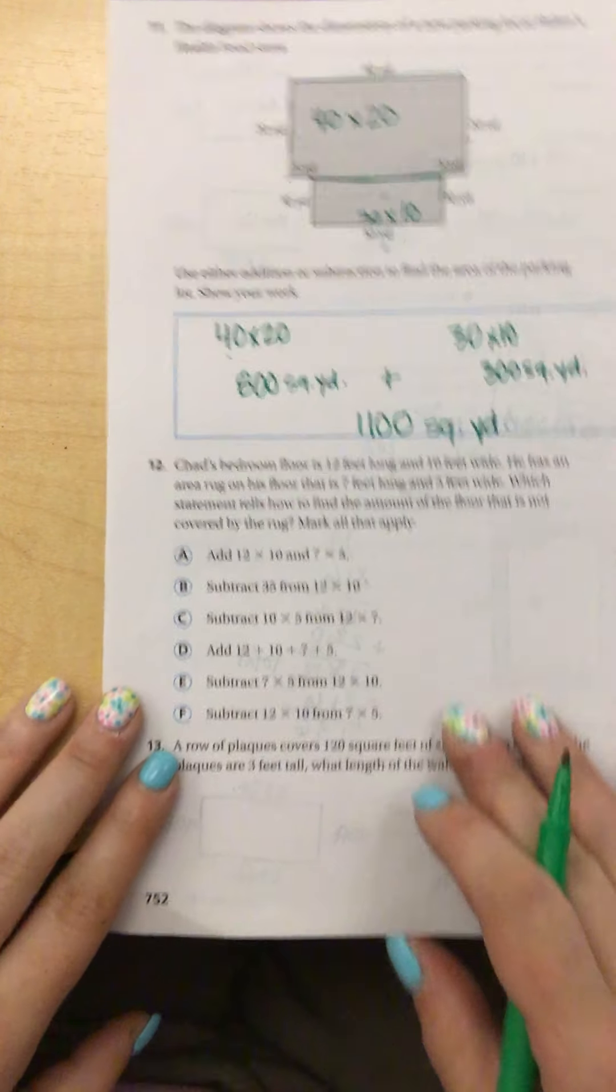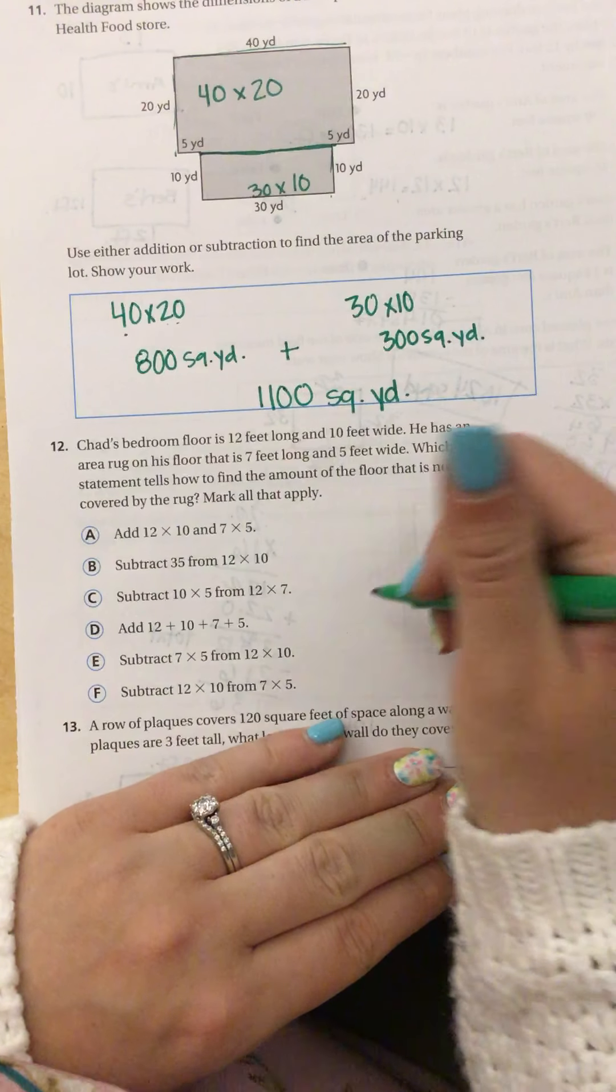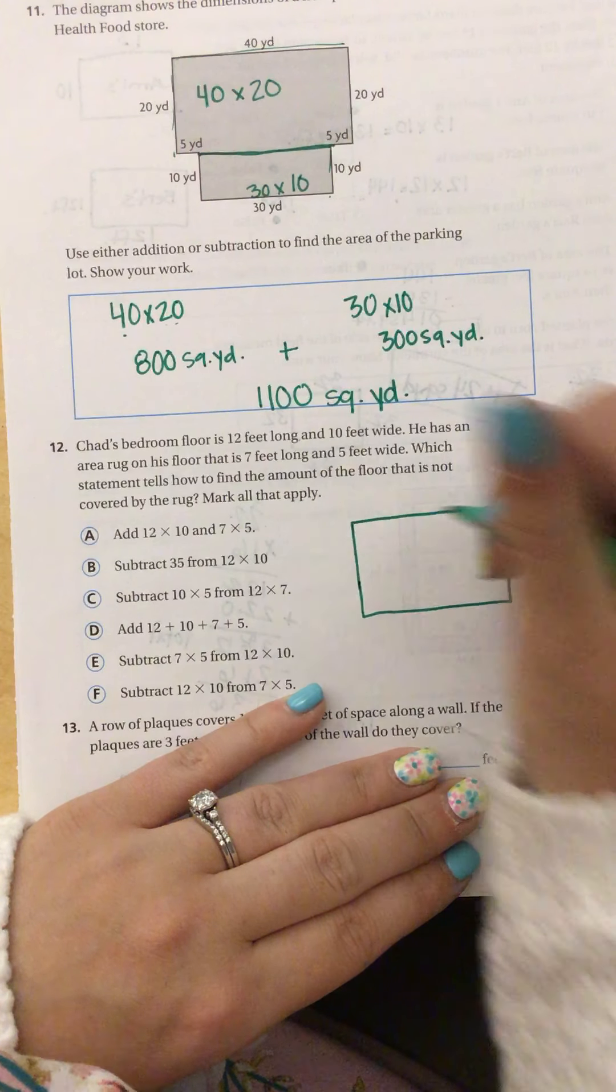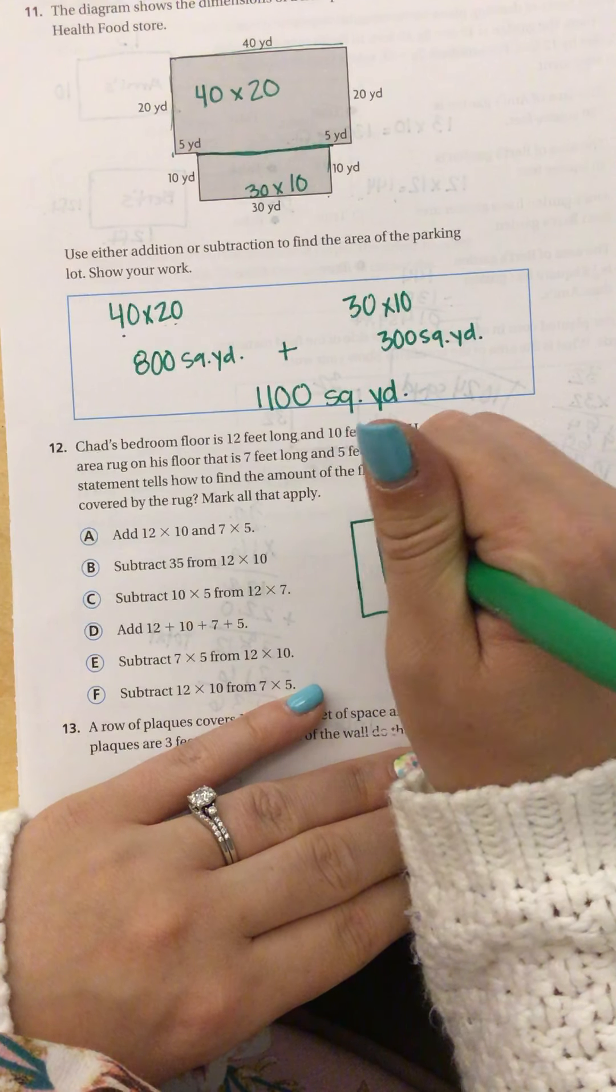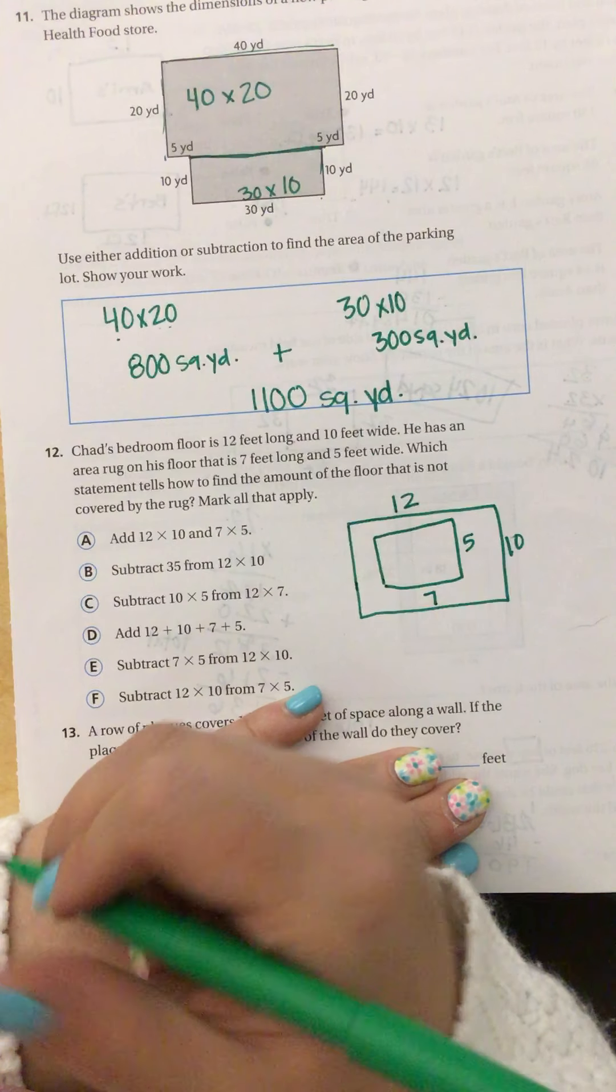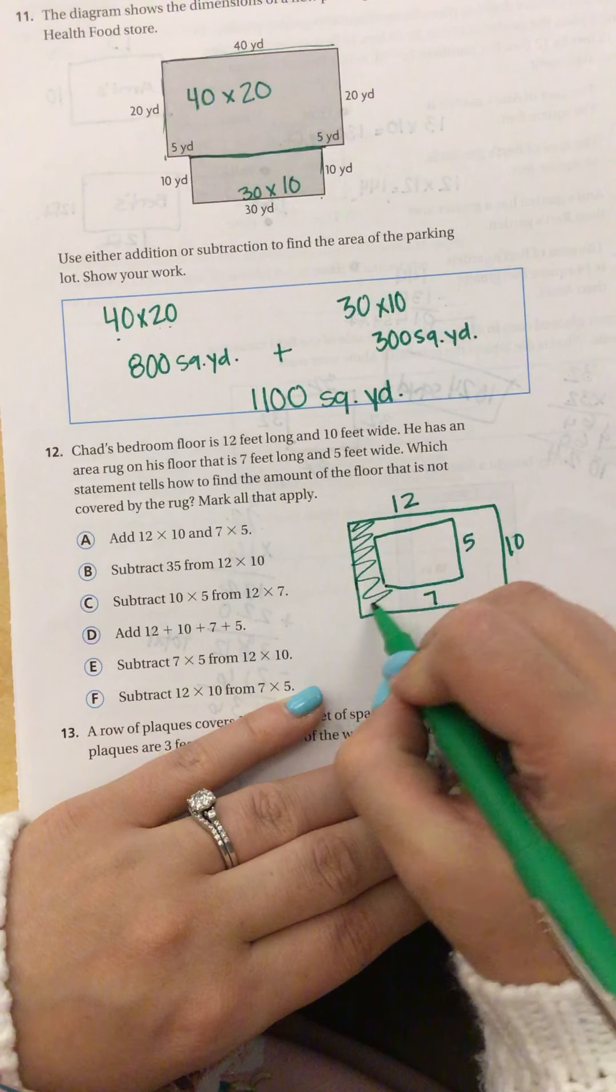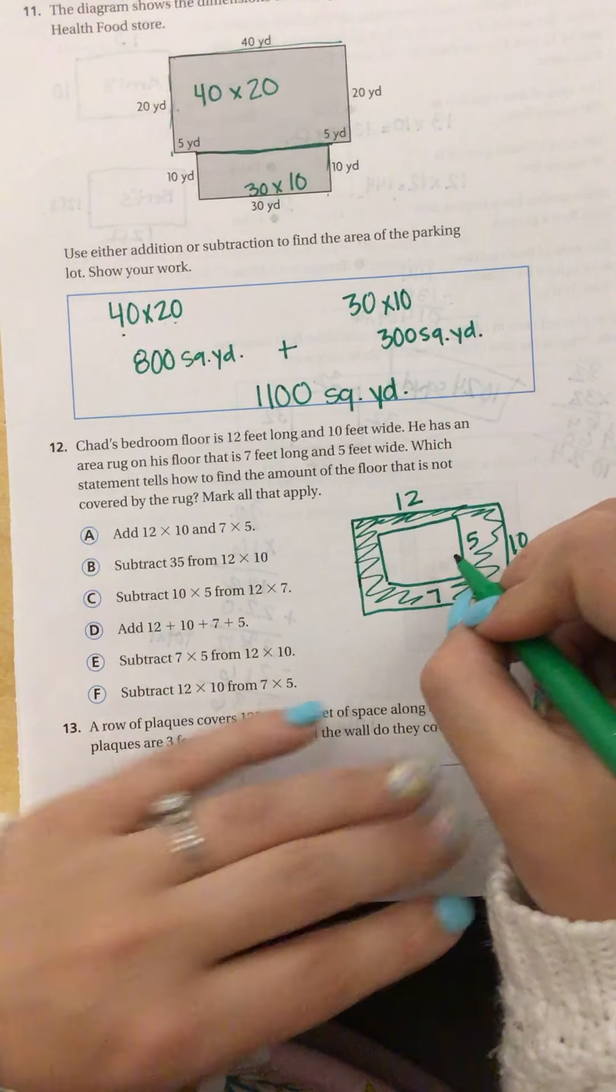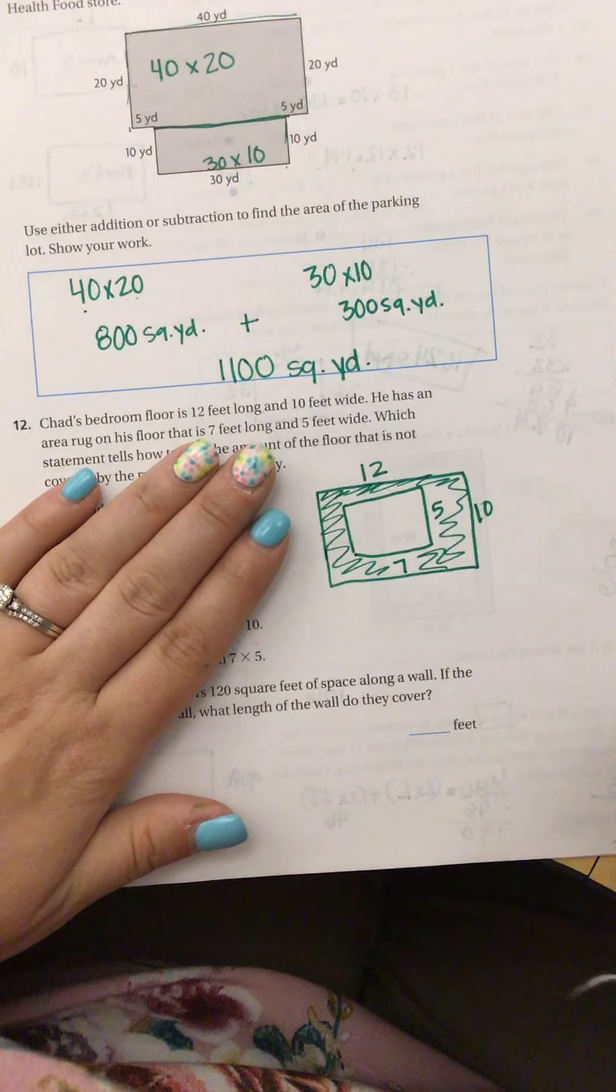All right, next question, number 12. Chad's bedroom floor is 12 feet long and 10 feet wide. So here's his bedroom floor, 12 feet long by 10 feet wide. He has an area rug on the floor that is 7 feet long and 5 feet wide. Which statement tells how to find the amount of floor that is not covered by the rug? So really, we want this area. Okay, so before I look at these, I'm going to go ahead and do what I know I should do.